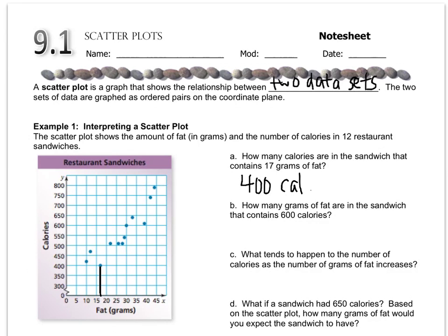How many grams of fat are in the sandwich that contains 600 calories? So you find 600 calories and then you find out that that is 30 grams of fat.